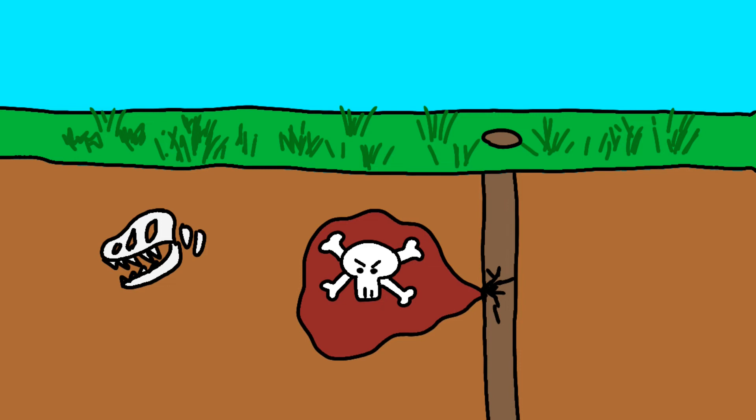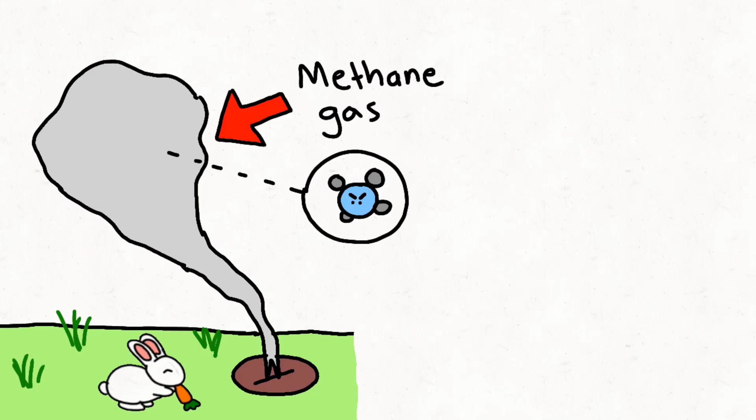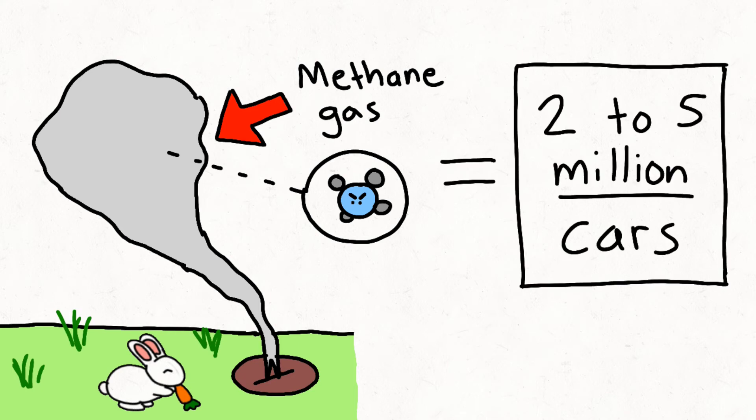Not only that, but they also emit methane gas into our atmosphere, one of the most problematic greenhouse gases. The EPA estimates that these millions of unplugged wells contribute to the same level of pollution equivalent to the CO2 emissions from 2 to 5 million cars in a single year.